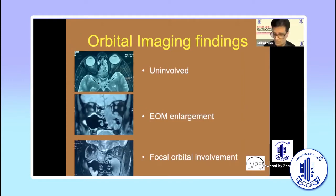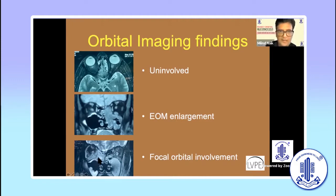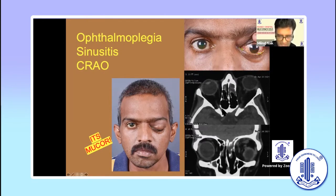On MRI or CT, the orbit could be entirely uninvolved, or you could see enlargement of an extraocular muscle adjoining the involved sinus, or focal fat streaking in the orbit generally seen in cellulitis in these patients. More extensive involvement could include diffuse involvement of the orbit or superior ophthalmic vein thrombosis. If you see the triad of ophthalmoplasia, very minimal sinusitis on the scan, and CRAO — unless proved otherwise, it's a case of mucormycosis, especially in a post-COVID patient.